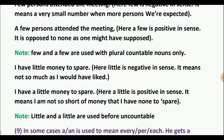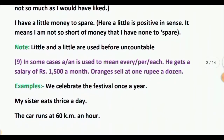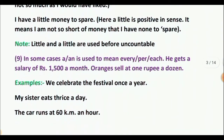Rule 9: In some cases, A or AN is used to mean 'every' or 'each.' Examples: 'We get a salary of $1,500 a month.' 'We celebrate the festival once a year.' 'My sister eats thrice a day.' 'The car runs at 60 kilometers an hour.'